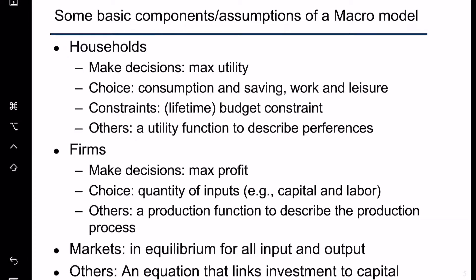For firms, we also assume they make decisions based on the principle of profit maximization. The firm chooses how much input to put into the production process — this input can include capital, labor, entrepreneurship, or land, though for simplicity we often focus on capital and labor. We also need a production function to describe the production process that allows firms to produce output.